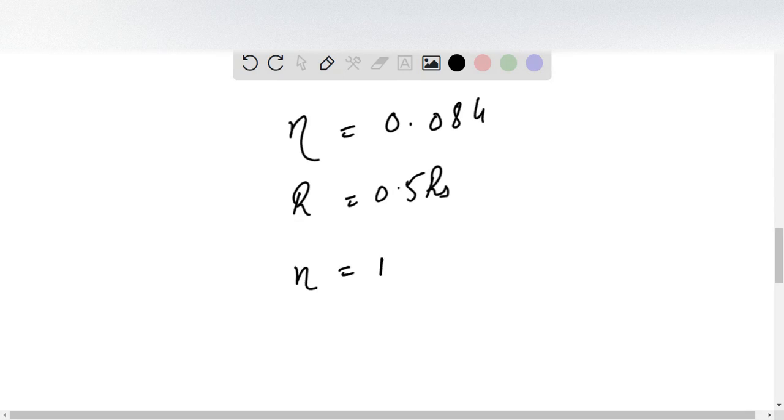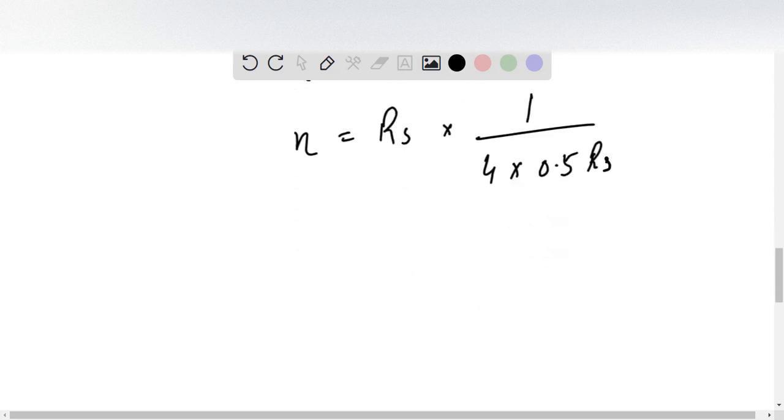η = R_S/(4×0.5R_S), so we get η = 1/2 = 0.5. That is the answer to this question.